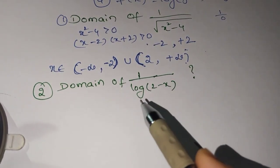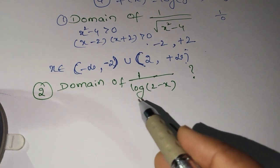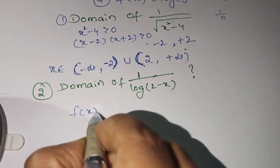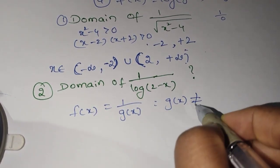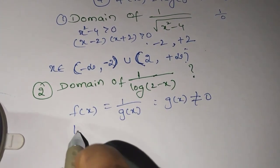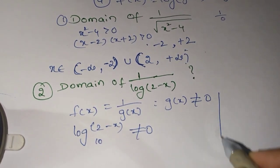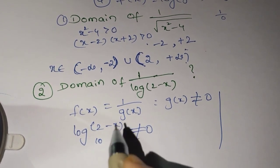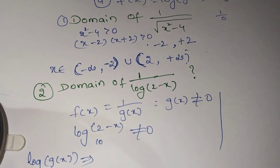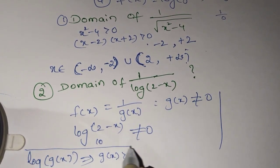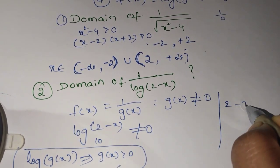Next question: find the domain of 1 by log of (2 minus x). First check with the rules. We know f(x) = 1/g(x) means g(x) ≠ 0, so log(2 minus x) ≠ 0. Also, since there is a log function, we apply the rule: for log g(x), g(x) must be greater than 0. So here g(x) is 2 minus x, meaning 2 minus x > 0.